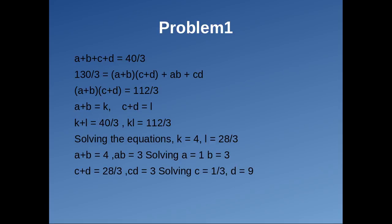We have a plus b plus c plus d equals 40 by 3. Also, 130 by 3 equals a plus b into c plus d plus ab plus cd. Since ab and cd both equal 3, replacing them we get a plus b into c plus d equals 112 by 3. Taking a plus b as k and c plus d as l, from the first equation k plus l equals 40 by 3, and from the second equation kl equals 112 by 3. Solving these equations, we get k equals 4 and l equals 28 by 3. Since k equals a plus b equals 4 and ab equals 3, solving gives a equals 1 and b equals 3. Similarly, c equals 1/3 and d equals 9.